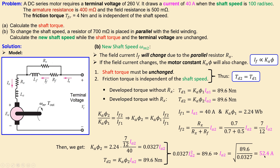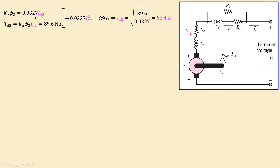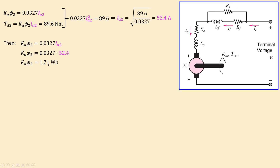We can now substitute the new armature current of 52.4 amps into the expression for the new motor constant. This gives a new motor constant of 1.71 webers. So the motor constant decreases from 2.24 to 1.71.